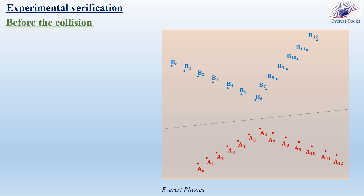Let's start determining the linear momentum of the system before collision. Given tau equals 20 milliseconds, tau is the time interval between two consecutive points, such as the time interval between A0 and A1, between A1 and A2, also between B0 and B1, B1 and B2, etc.